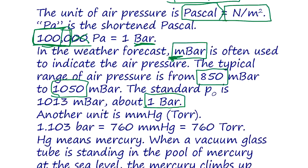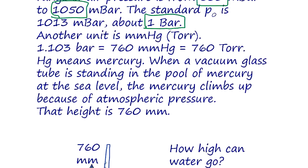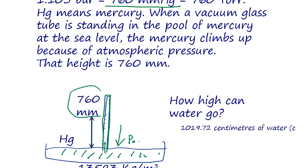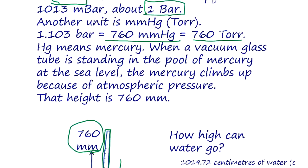An older method of measuring atmospheric pressure uses a mercury barometer: mercury is placed in a vacuum glass tube, and atmospheric pressure pushes the mercury up. It climbs to 760 millimeters. This unit is called torr — T-O-R-R — representing the height of the mercury column.